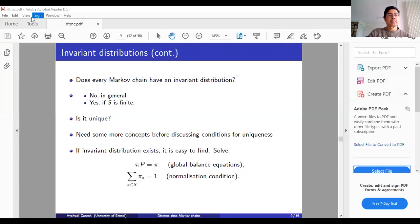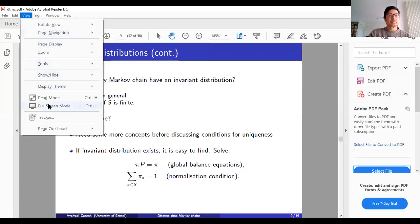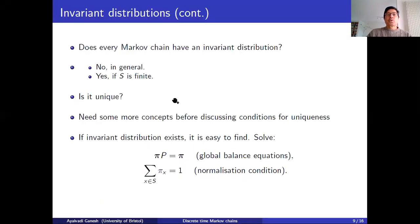Hi, welcome back. We continue with our discussion of discrete time Markov chains. Let's start with a very quick recap of what we saw last time. We defined what a discrete time Markov process is: the future of the process is conditionally independent of the past given the present state. That's what makes a process Markovian.